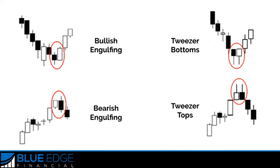That's it — pretty simple! These are the four dual candlestick patterns you can look out for to identify a reversal in a trend, whether it's an uptrend or a downtrend. In the next section we're going to talk about triple candlestick patterns to finish up the candlestick pattern section of this module.